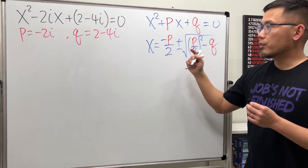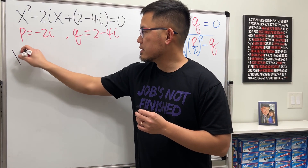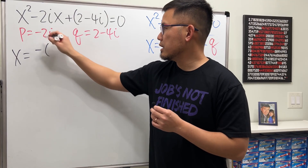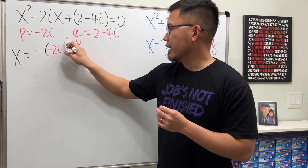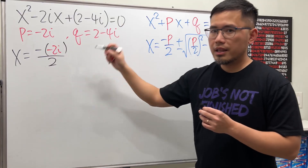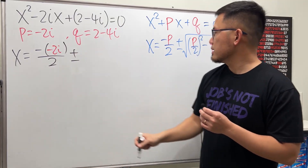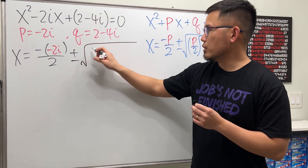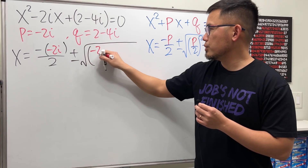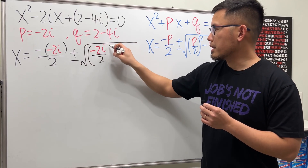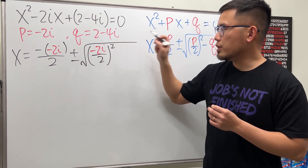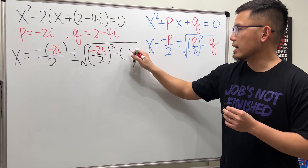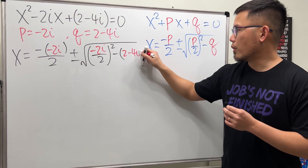So x equals negative p over 2, which is negative times negative 2i divided by 2, plus or minus the square root of p over 2 squared minus q — that is, negative 2i over 2, squared, minus the quantity 2 minus 4i.